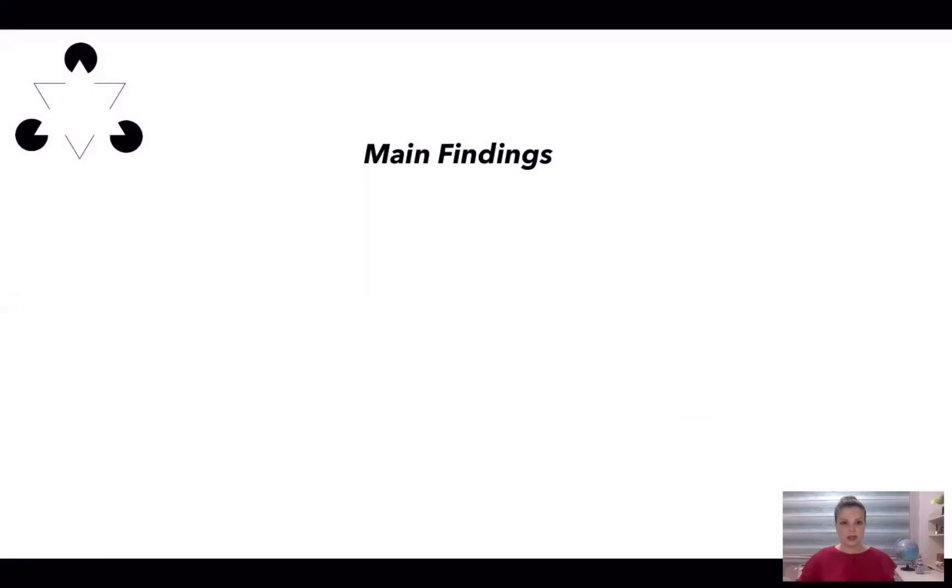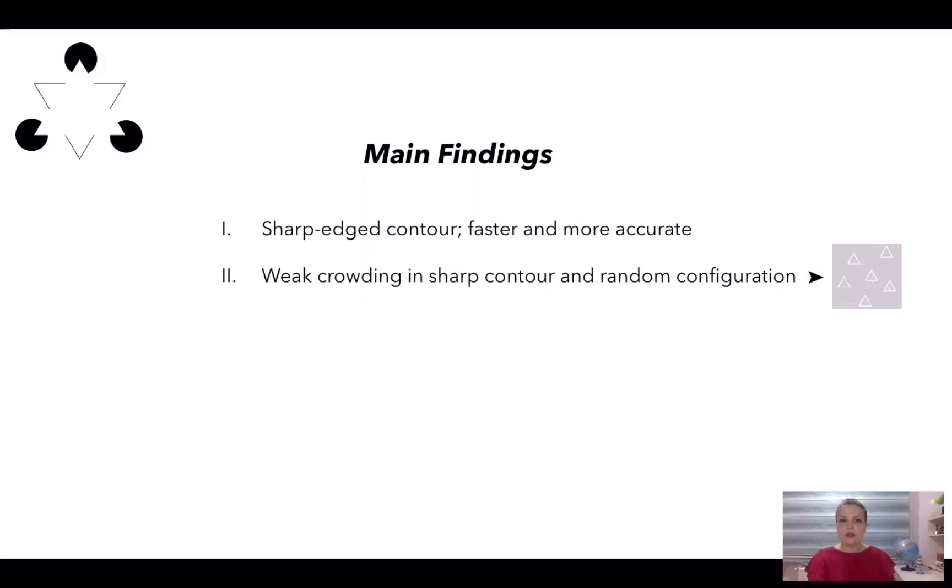Both experiments have consistent results and these are the common implications from them. One: Sharp-edged contour was faster and more accurate than curved-edged ones. Two: The strength of crowding was weak in sharp-edged contour and random configural conditions. As you can see here. Three: Grouping and similarity are key for the strength of crowding. Four: Global and local coherence is not necessary for grouping. Having a pattern is enough to crowd severely.